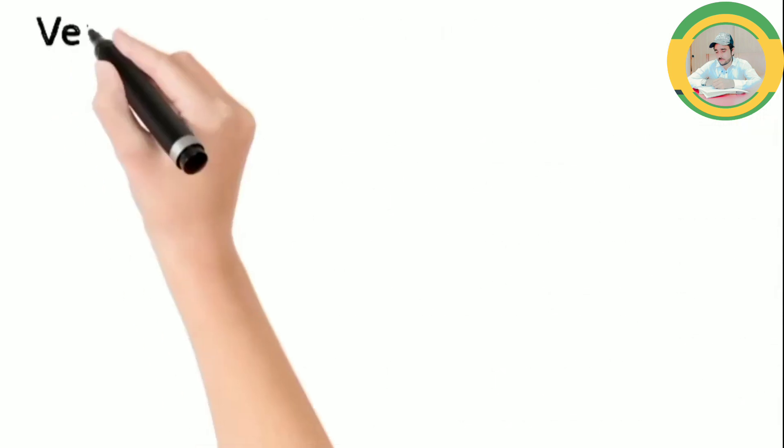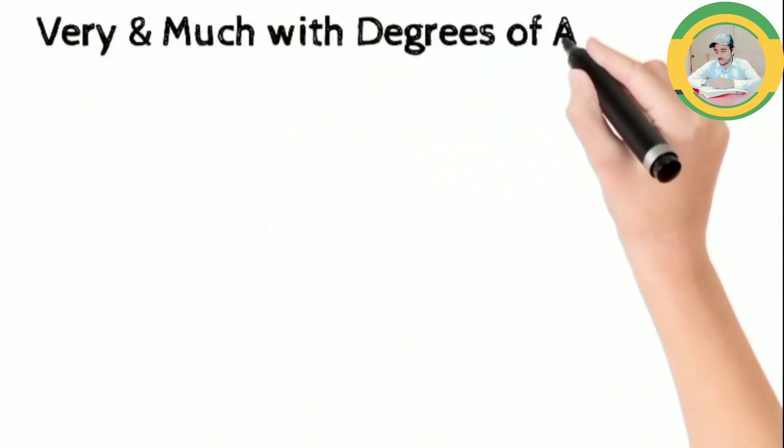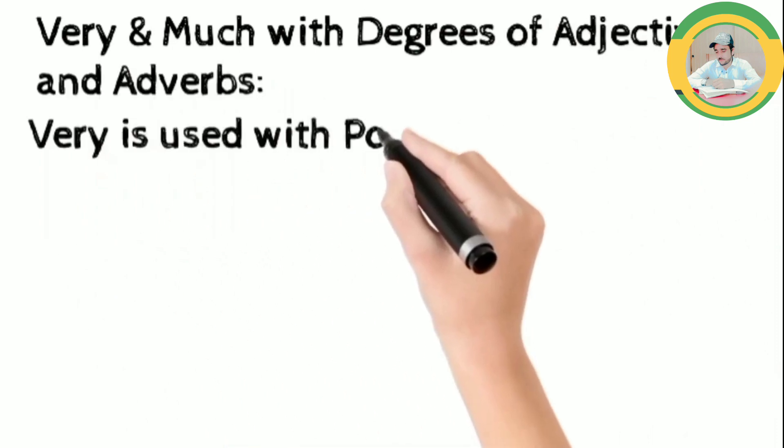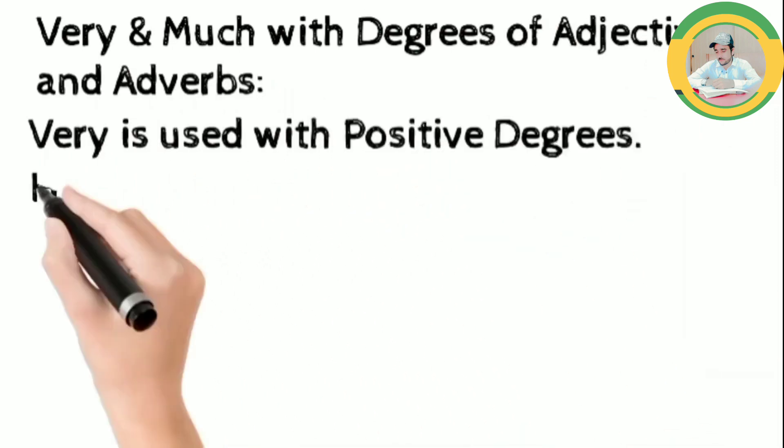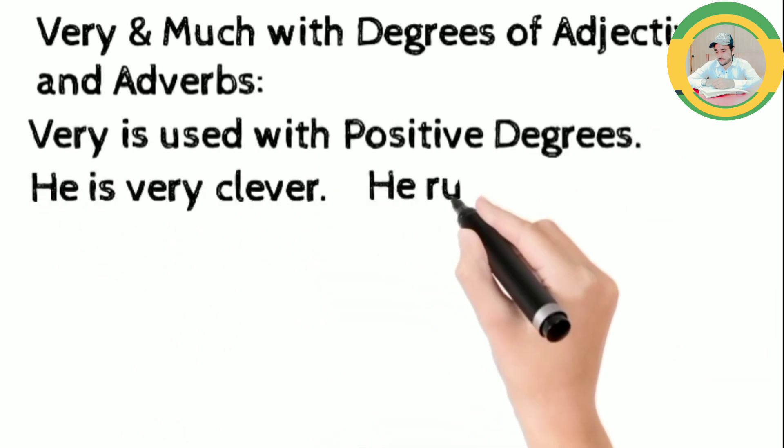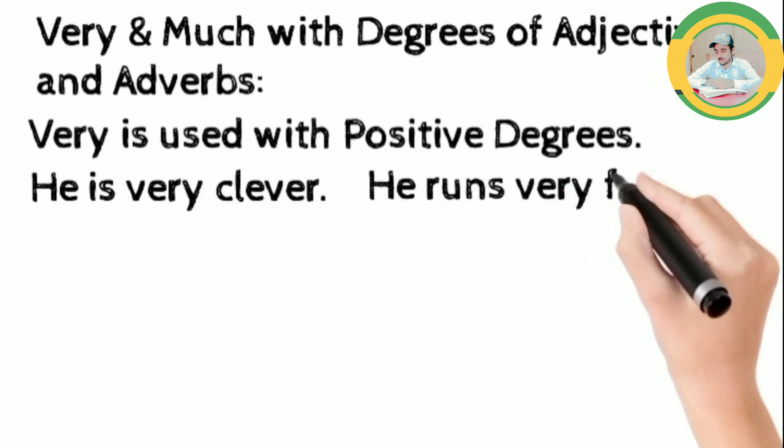Now we see very and much with degrees of adjectives and adverbs. Very is used with positive degree. For example, he is very clever. He runs very fast.